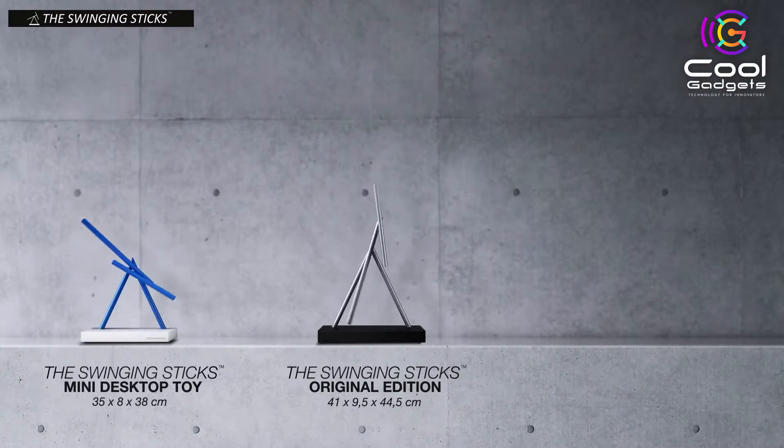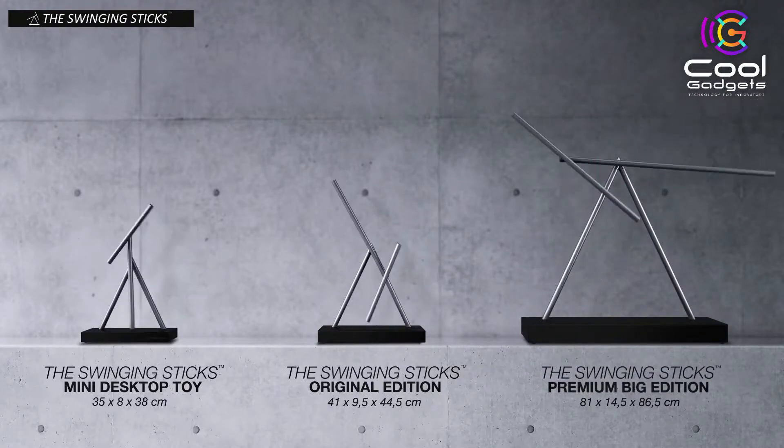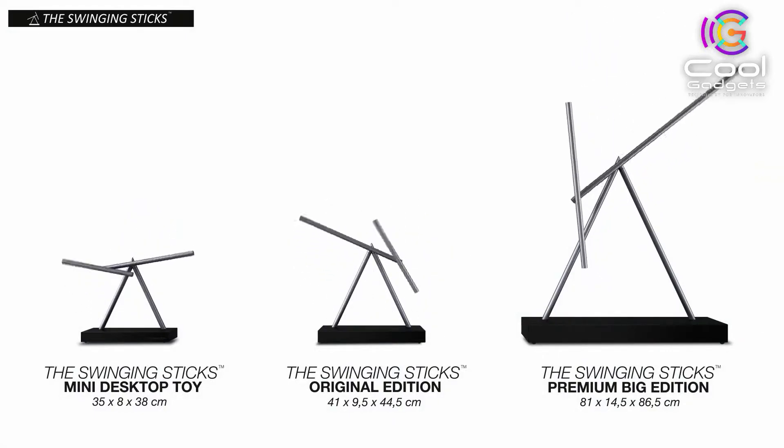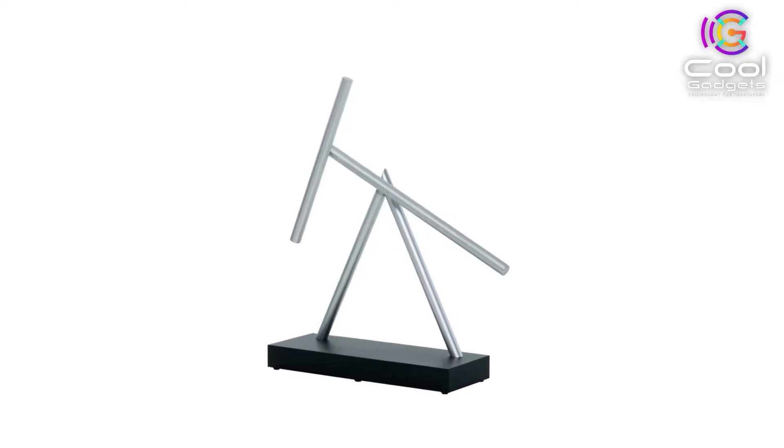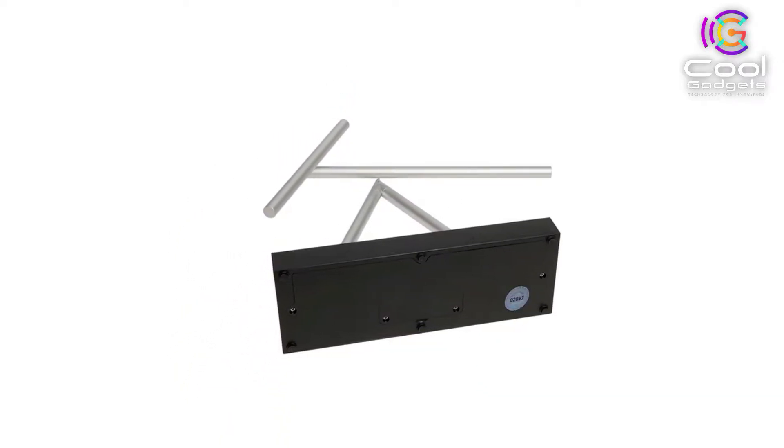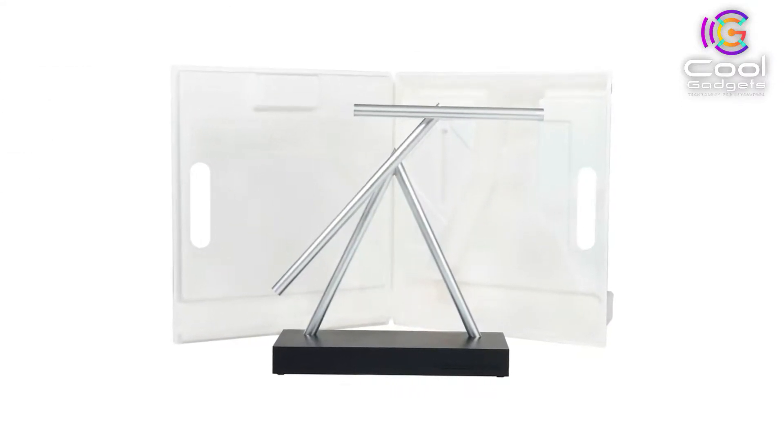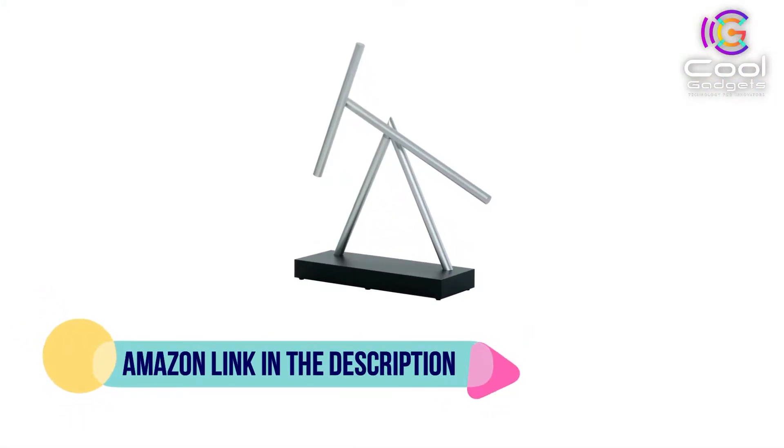In 2010, the Swinging Sticks became even more popular after the director of Marvel's Iron Man 2 chose to feature the Swinging Sticks in a scene between Pepper Potts and Tony Stark in the movie. The director had been in Taiwan where he found the Swinging Sticks in a local store. He found the product so intriguing that he decided to bring it back with him to the United States and use it in his movie Iron Man 2. If you like this product, please check out the Amazon link in the description below.